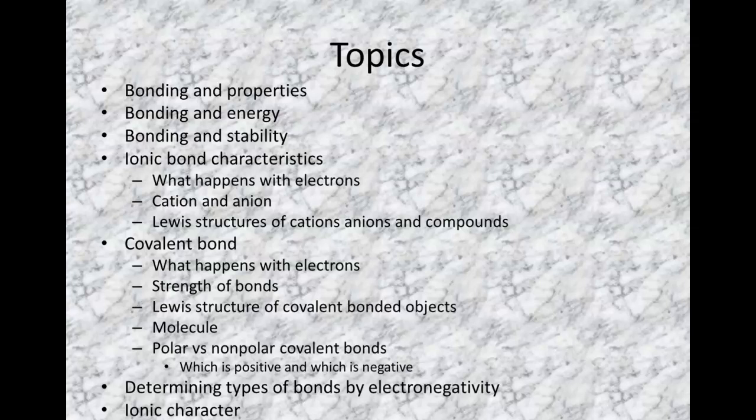The second part we went through was covalent bonds and how they're different in terms of what happens to electrons. It's kind of an important thing, what happens to the electrons in a particular bond. How the strength of covalent bonds compares to ionic bonds. How we draw Lewis structures of covalently bonded objects. Remember, that's the puzzle piece thing we did. Covalently bonded substances are referred to as molecules.